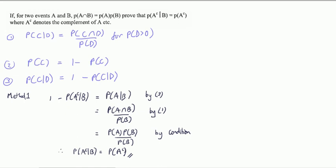Hi guys, another question on conditional probability similar to the one I've done recently, so I'm going to go slightly quicker on this one. We're given two events A and B that a condition is satisfied, show that this then holds.